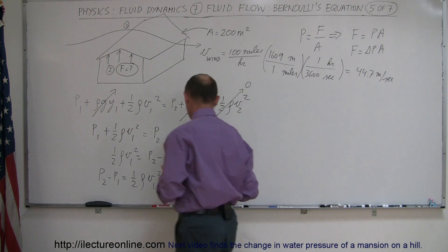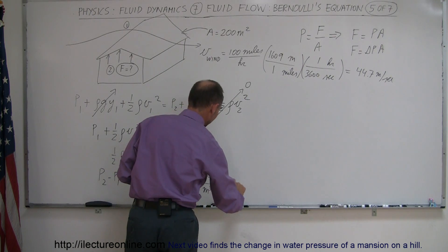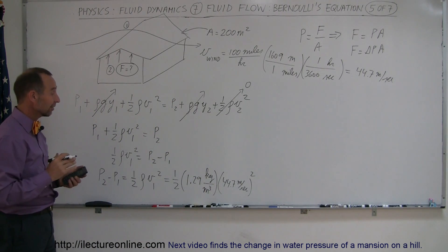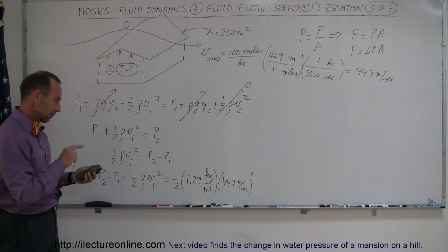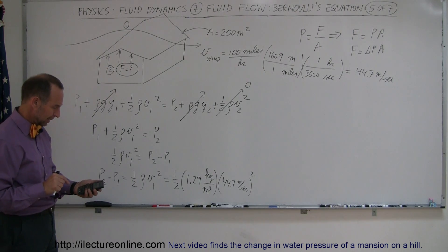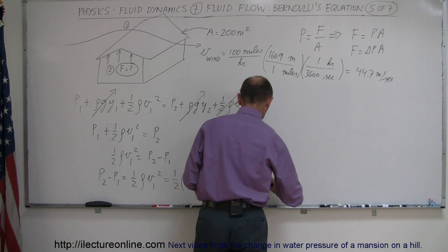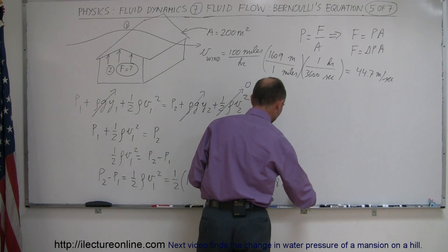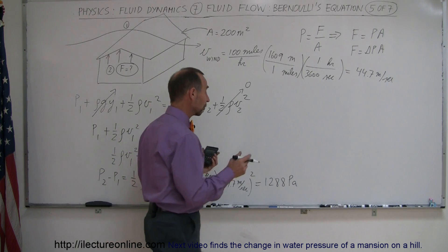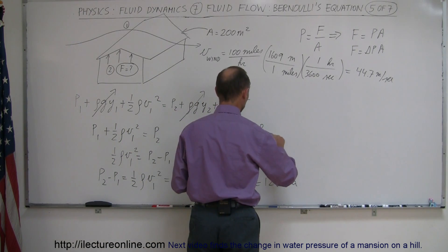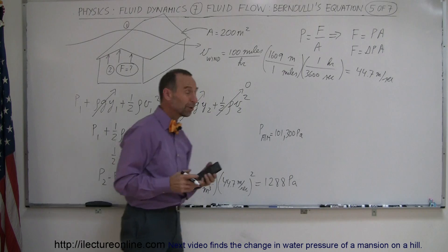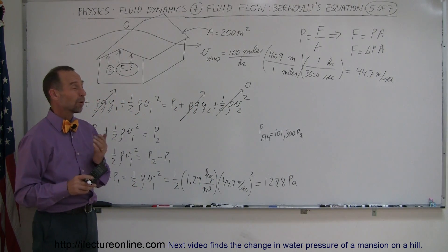Plugging in 44.7 m/s, squaring it, multiplying by 1.29, and dividing by 2, we get a pressure difference of 1,288 pascals, which is the same as newtons per square meter. That might not sound like a lot since atmospheric pressure is 101,300 pascals — this is just a little over 1% difference — but it can actually make a significant difference.